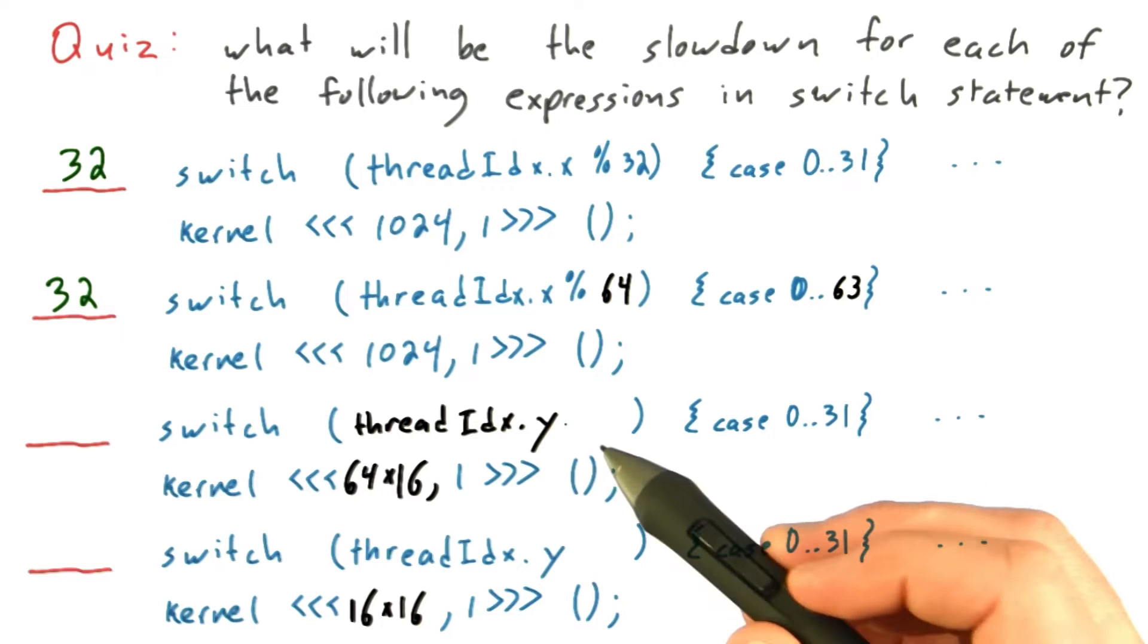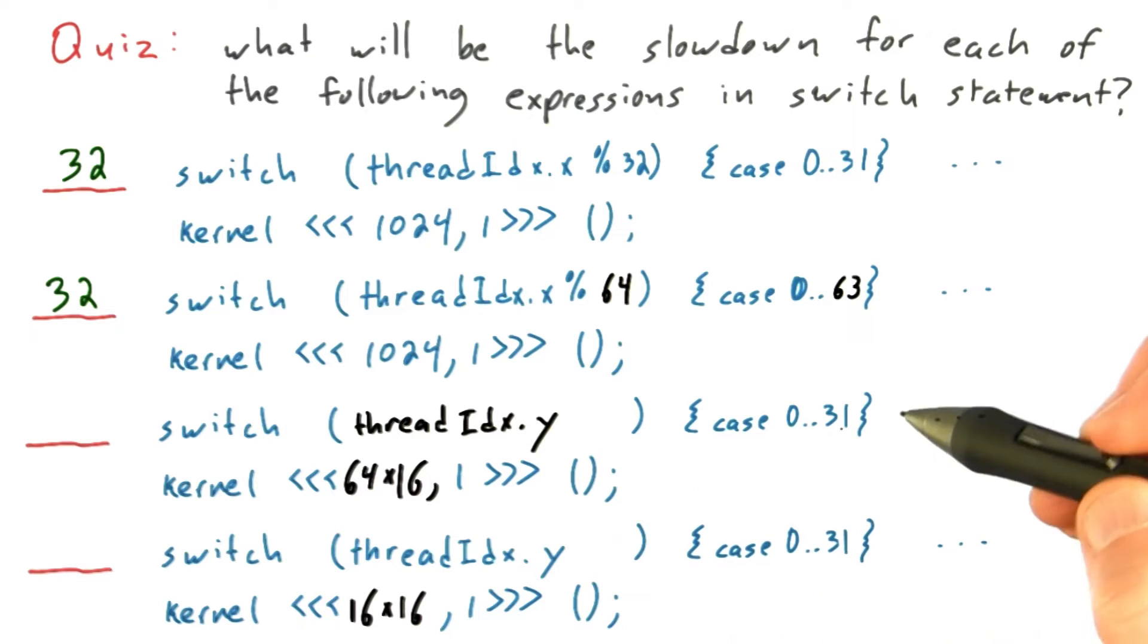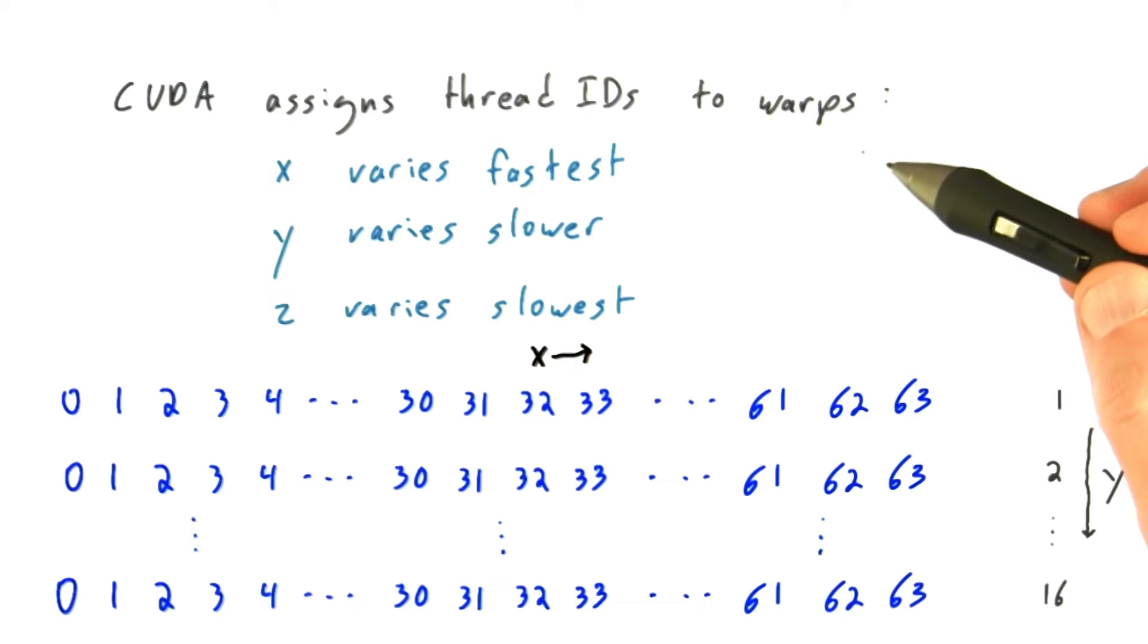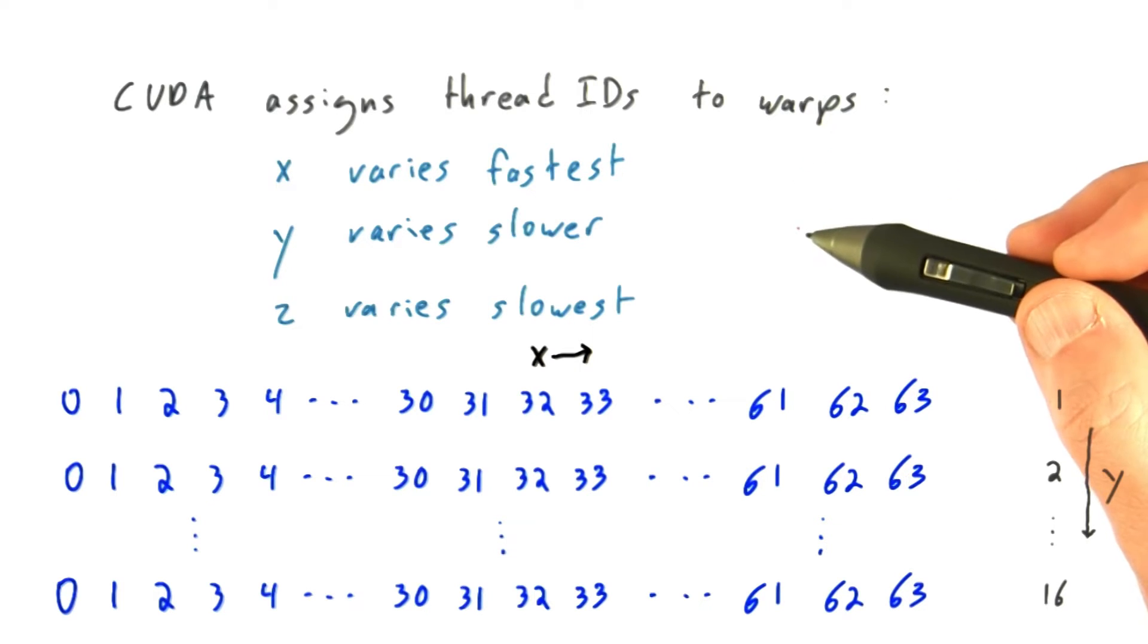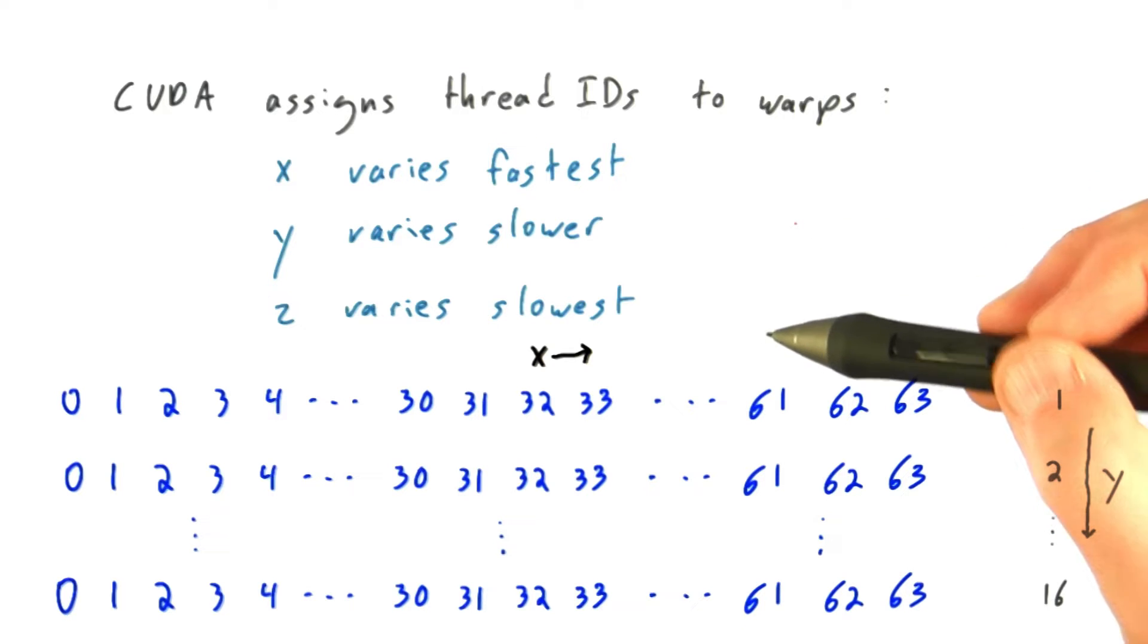What about this case? We're going to switch on the thread index of Y. The thing you need to understand is that CUDA assigns thread IDs to warps in such a way that the X ID varies fastest, the Y ID varies slower, the Z ID varies slowest.